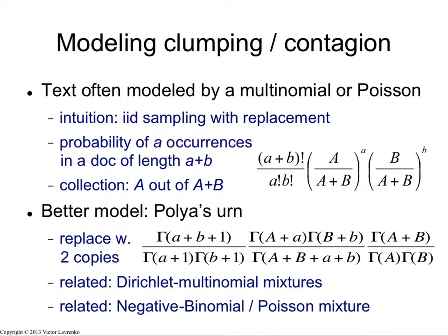If you wanted to construct a probabilistic model of text, a much better model would be something like a Polya urn. With a Polya urn, you're sampling words from an urn, but you are putting them back and replacing each word with two copies of itself. So the word becomes much more likely to be sampled again under the Polya urn. We're not going to spend much time on this — I'm just putting this out for your information if you ever have to do these.